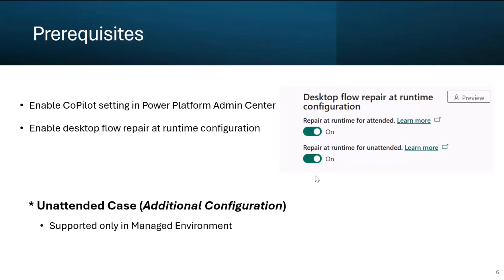To use this feature, we must enable some configuration settings in the Power Platform Admin Center. The two important settings are: first, the Copilot setting, and second, the Desktop Flow Repair at Runtime configuration. There are separate settings for attended and unattended runs. One important thing to note: we need to enable the Power Platform environment as a Managed Environment to make this feature work in unattended mode scenarios.